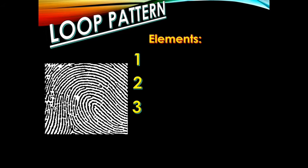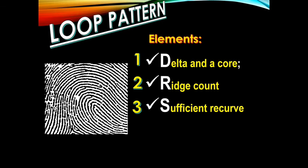Remember the three elements of a loop pattern. For you to easily memorize, remember these three acronyms: DRS. D stands for the delta and the core, R for the ridge count, and S for the sufficient recurve.